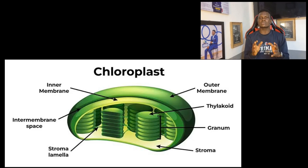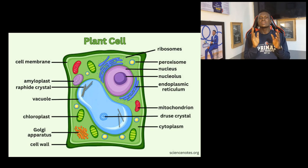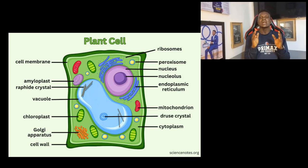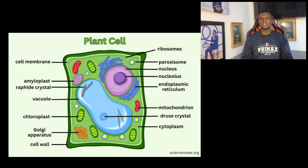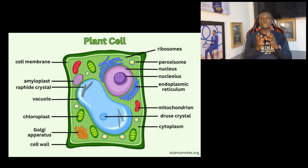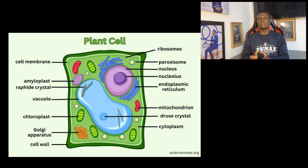Another structure is the chloroplast. The chloroplast contains green pigments called chlorophyll and is the site of photosynthesis in plants. We also have the vacuole, which is majorly present in plant cells and contains the cell sap. It is involved in osmoregulation — the regulation of substances entering and leaving the plant cell. The vacuole is surrounded by a membrane called the tonoplast.